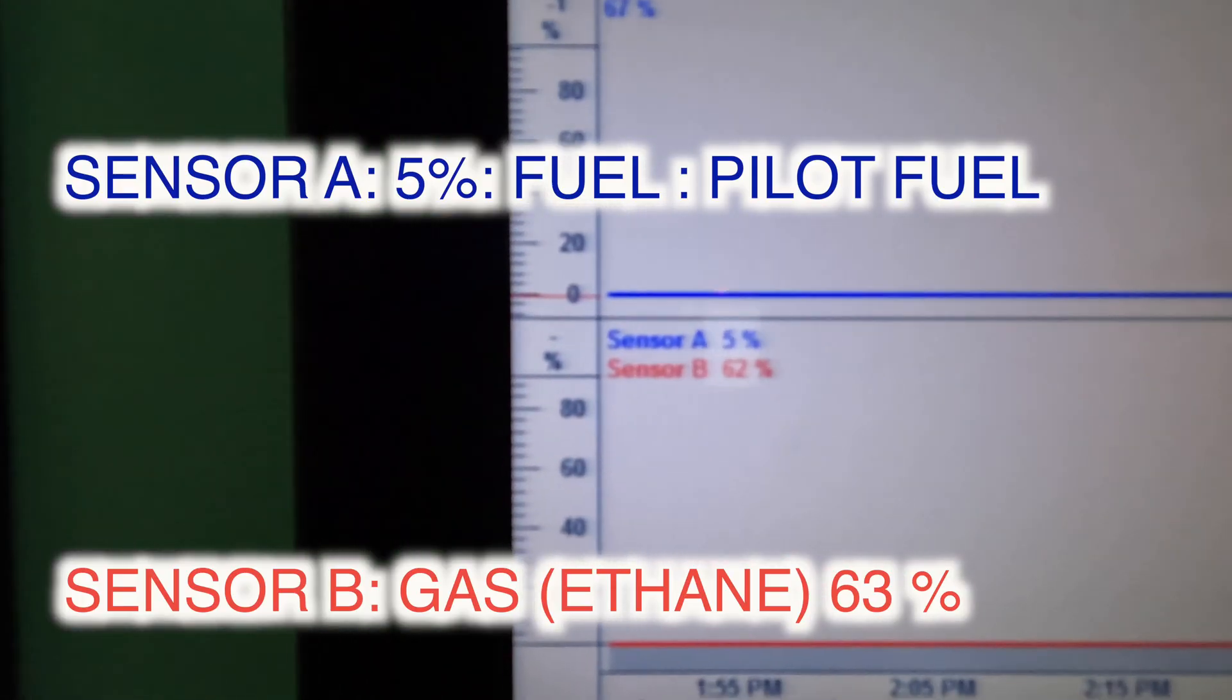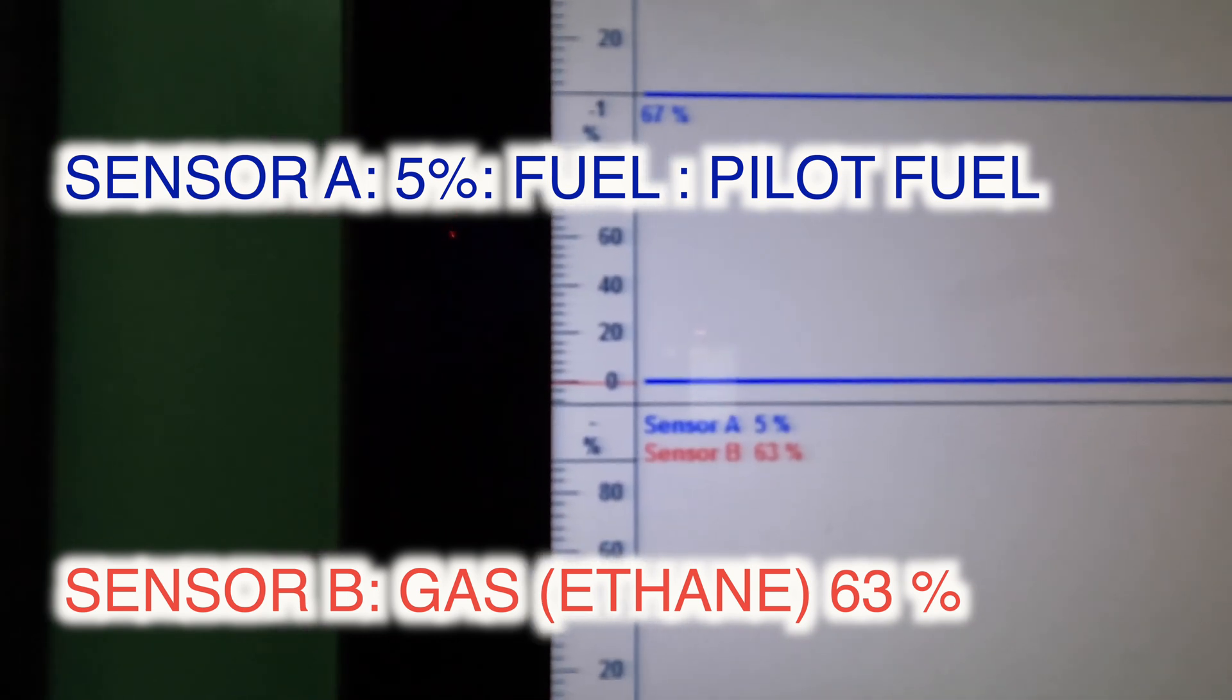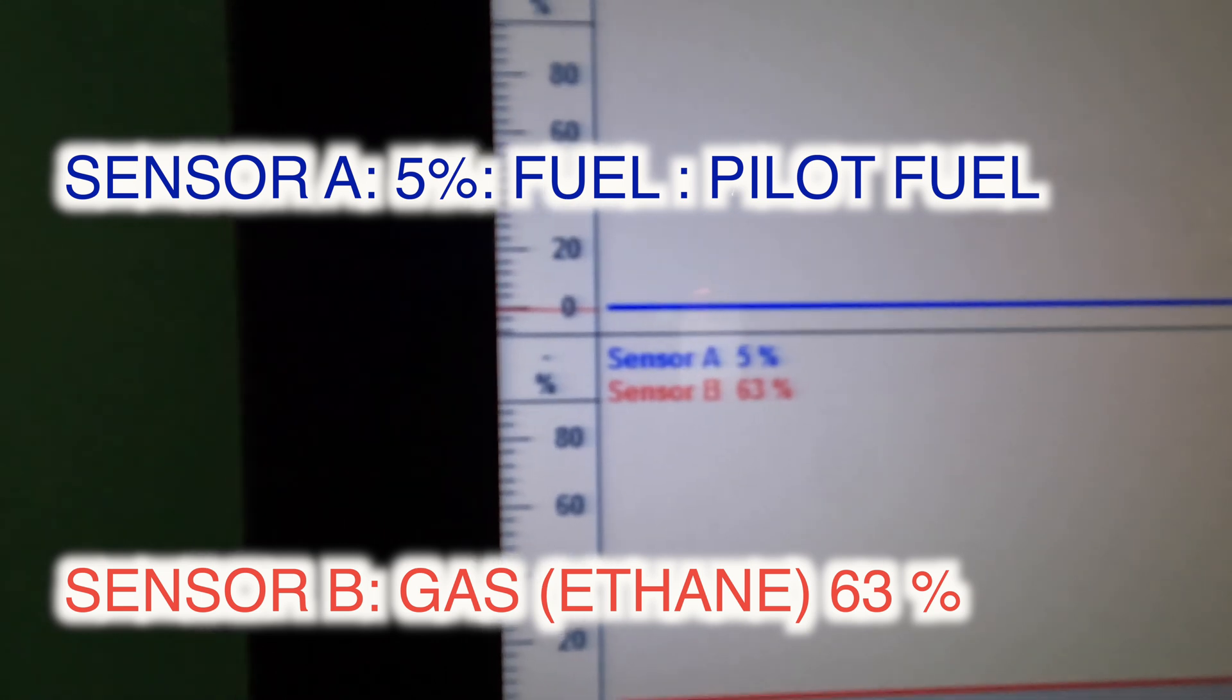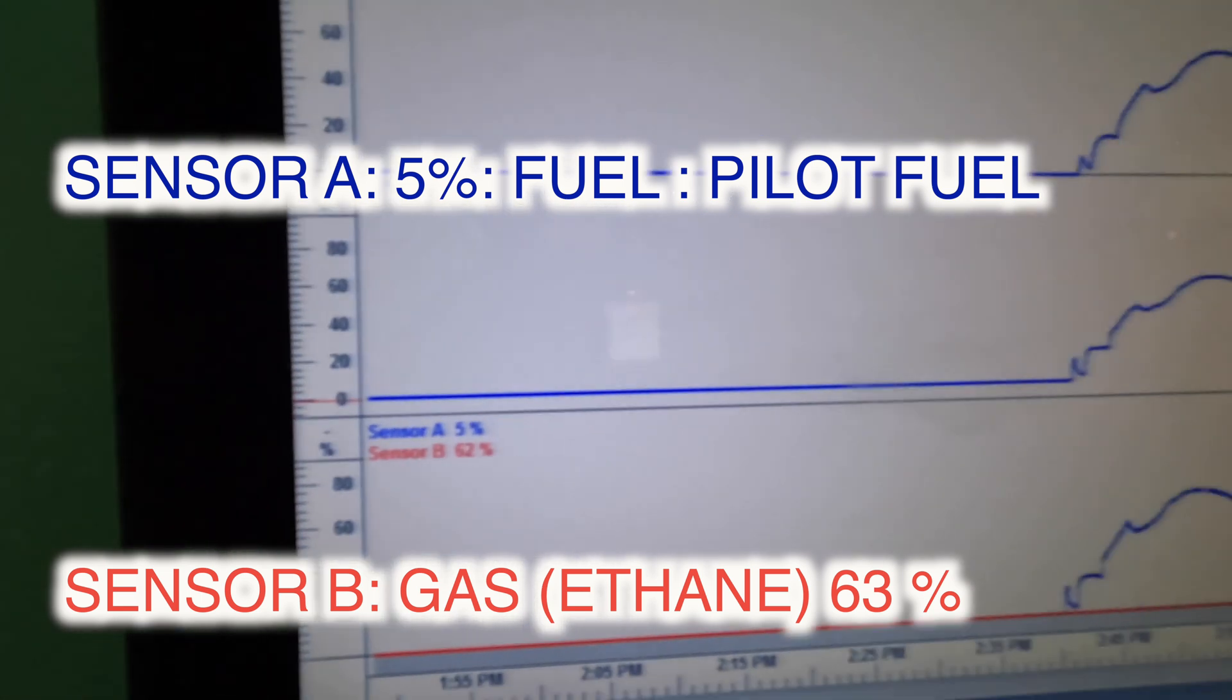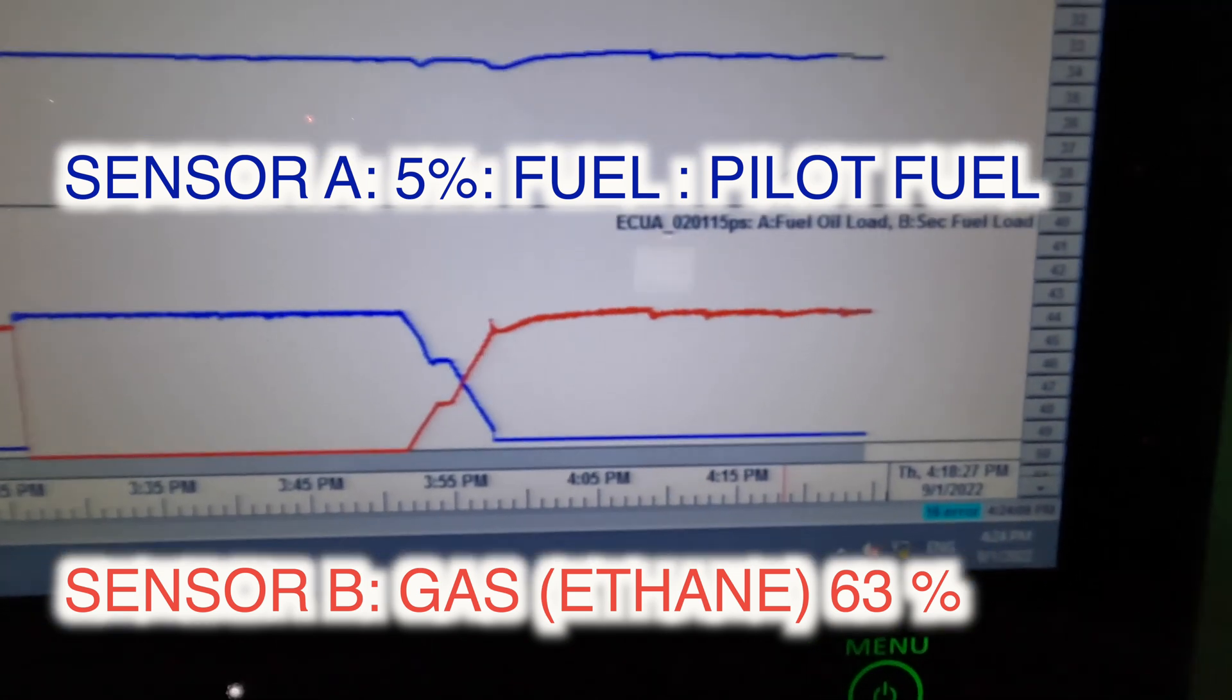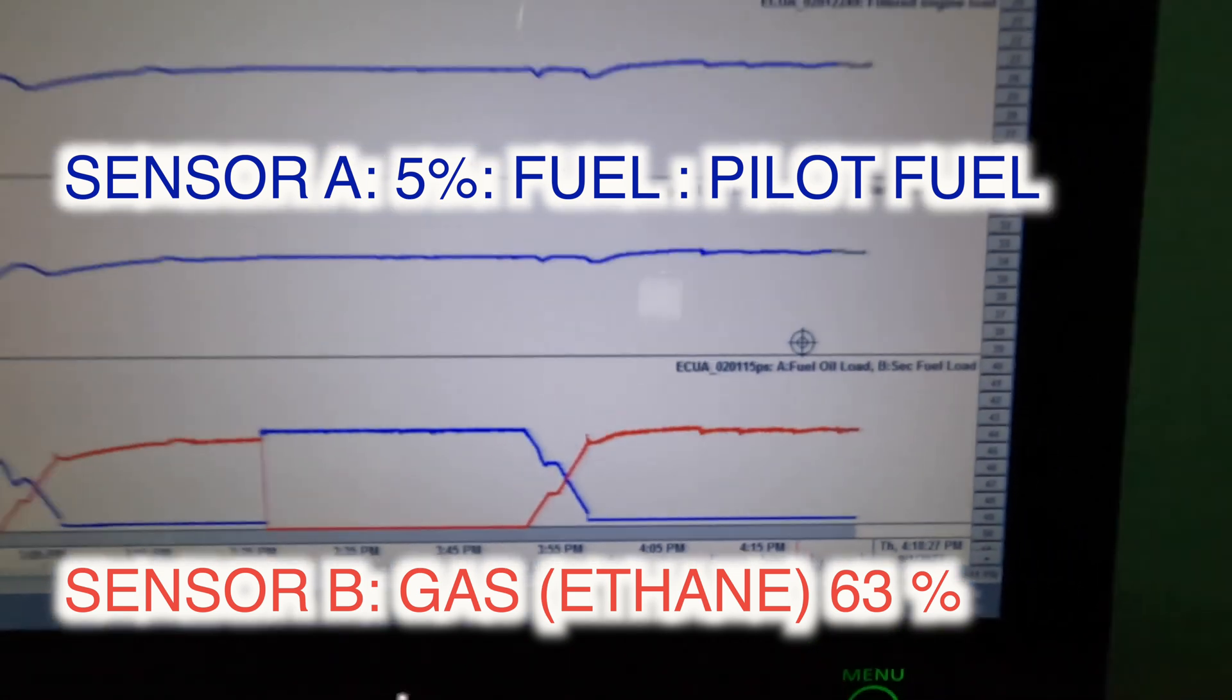The blue is the fuel index. So as you can see, pilot fuel is just 5 percent, your gas fuel, gas load is 62 percent. So your total index is 68. Back here, you can see that the gas is stable and the fuel is also stable.